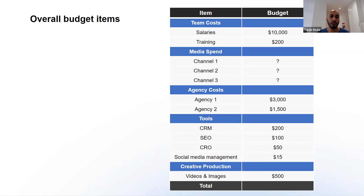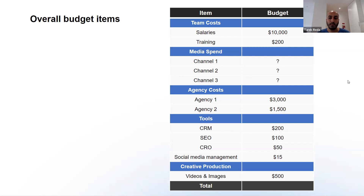Regarding how to budget if you don't have historical data — we'll come to that in the coming slides. We'll look at a method to estimate your budgets. All these items like team costs and tools you can figure out pretty easily, but when it comes to media spend, we need to follow some logical steps to come up with budgets tied to our goals. We'll spend some time figuring out how to come up with budgets for your media campaigns.